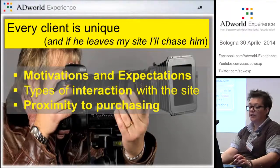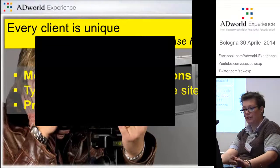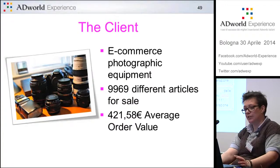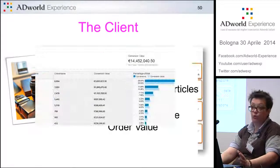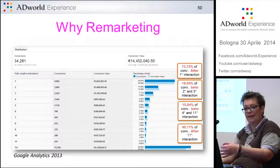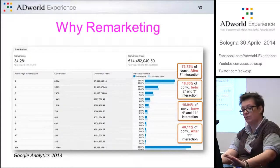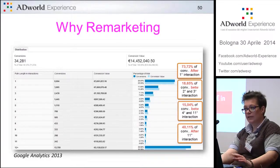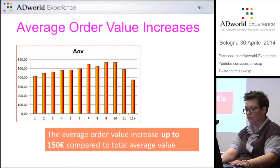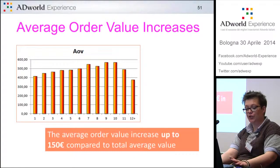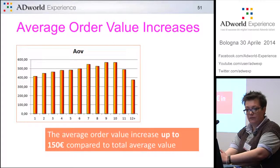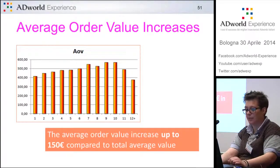Remarketing in general is necessary because nearly 74% of all conversions — meaning all transactions — happen on a following occasion, meaning after the first visit. A significant portion occur after the 11th visit to the website. That means people think quite a lot before buying. We're not talking about small cheap items, but sometimes very expensive photographic equipment. The fact that conversion requires a significant number of interactions has led the average order value to increase by 150 euros compared to the overall average value.